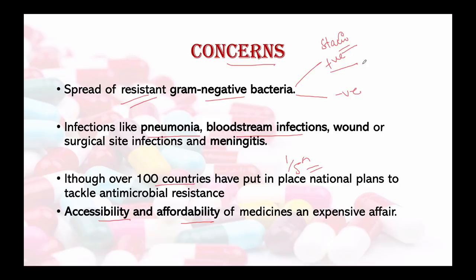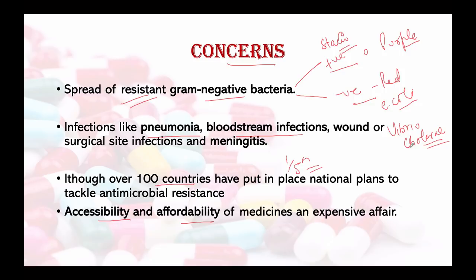E. coli is a main cause of food-borne diseases. Gram-negative bacteria can also cause pneumonia and sexually transmitted diseases like gonorrhea, which is why we need to be very careful and targeted in our antibiotic use.